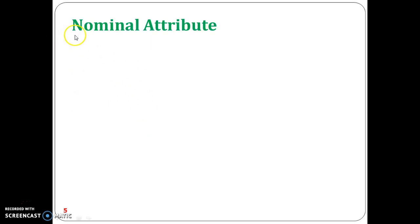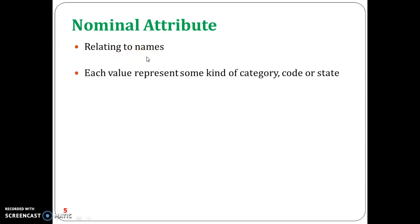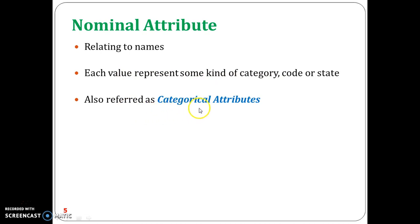Now we shall start with the nominal attribute. Nominal means relating to names. The values of a nominal attribute are symbols or names of things, representing some kind of category, code, or state. Since it represents categories, this is also called a categorical attribute.